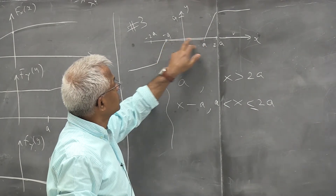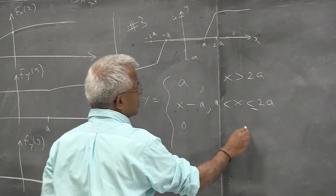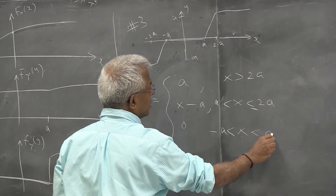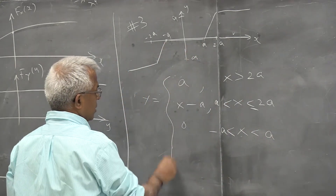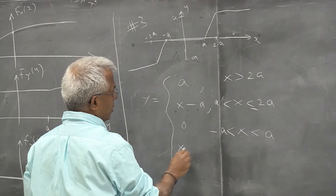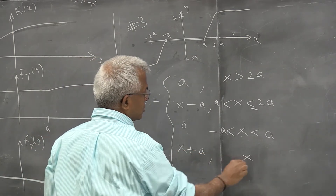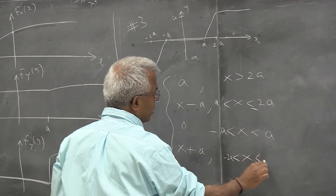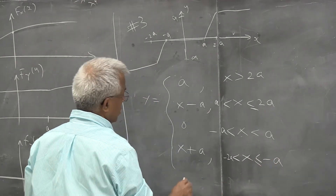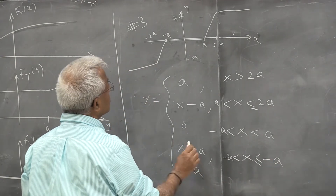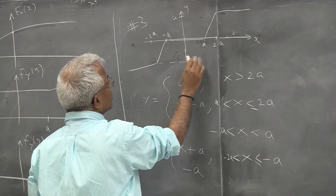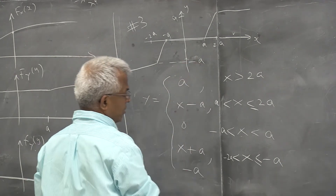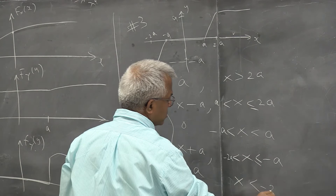And then y takes the value of zero when x is between minus a and plus a, as you can see here. And y is x plus a when x is between minus 2a and minus a. And finally, y is minus a when x is less than minus 2a.